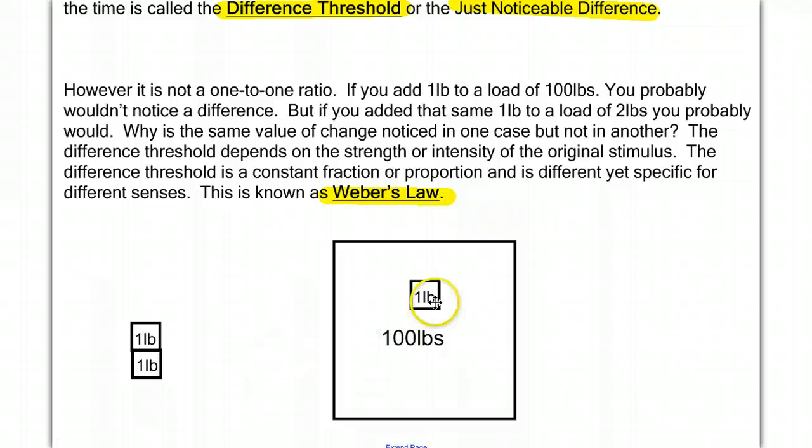So the bigger the original stimulus, the bigger the new difference would have to be for us to recognize it. And the smaller the original stimulus, the smaller change we would be able to recognize. So on 1 pound, we might notice adding 1 ounce. But to feel the difference when we're carrying 100 pounds, it might be an increase of 5 pounds before we'd even notice it.